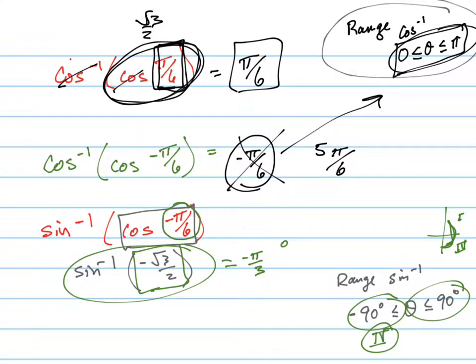That's actually in radians, not degrees. So you could have also said negative 60 degrees.